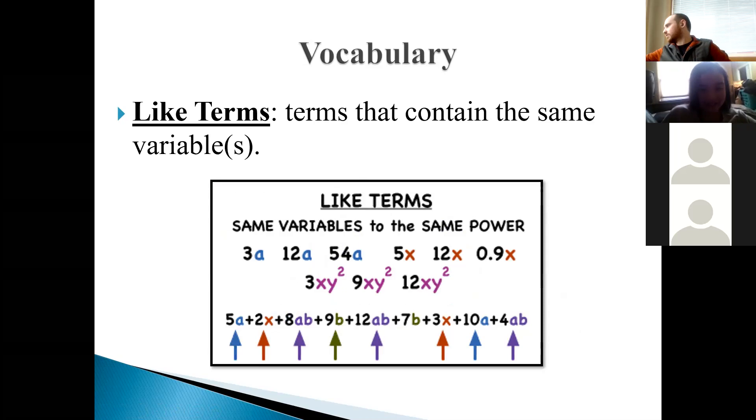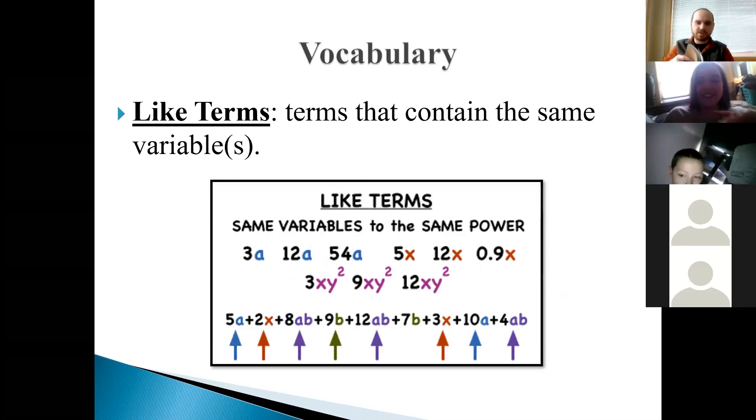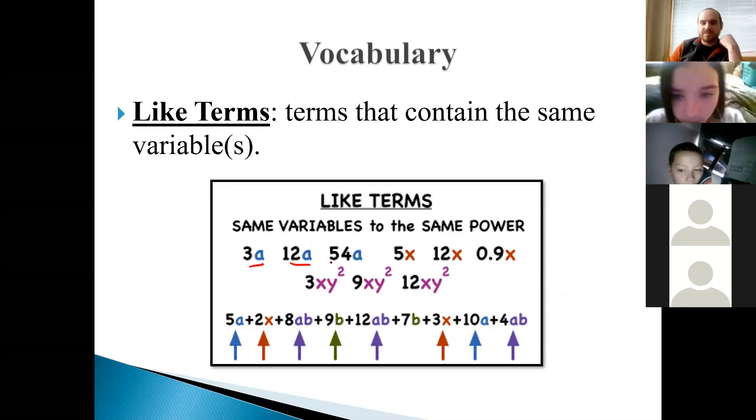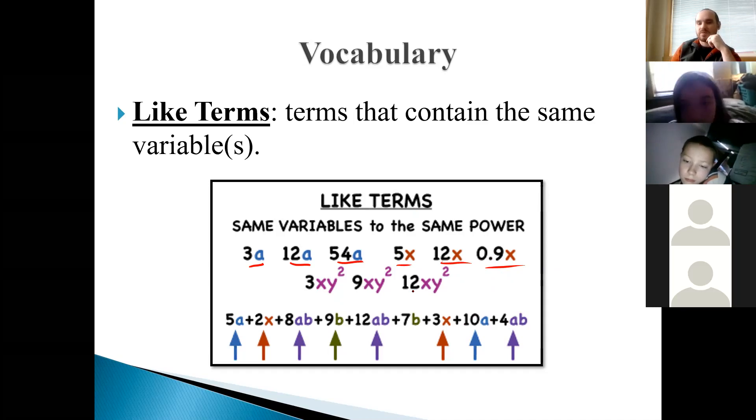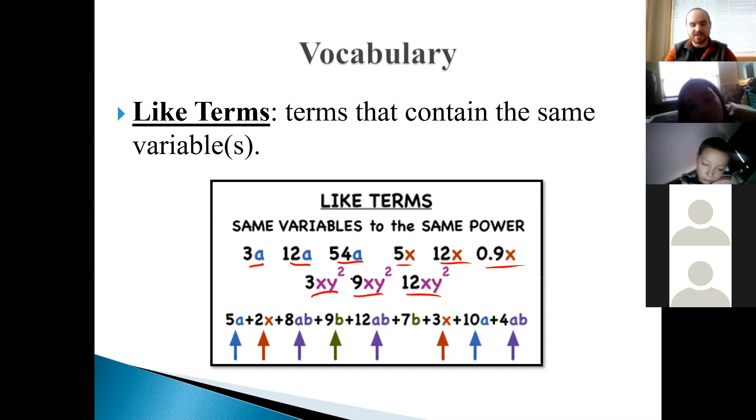Like terms. Is this still a vocab word? Hold on, pull it up. I think it is. So like terms are terms that contain the same variables. This is our last vocab word. Like terms, terms that contain the same variables. So here, for instance, all of the a numbers, so 12a, 3a, 54a, these are all like terms. The 5x, the 12x, the 0.9x, these are all like terms. And then the 3xy squared, 9xy squared, and 12xy squared are also all like terms. We actually talked about this a little bit ago, or a while ago, when we were doing the combining like terms day in our back to basics unit, which some of you still haven't finished, by the way.